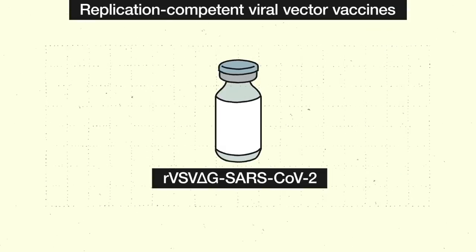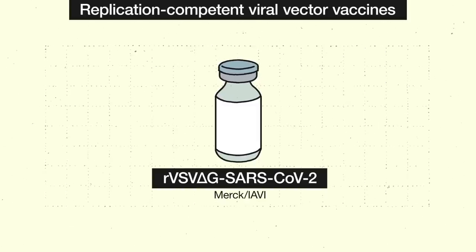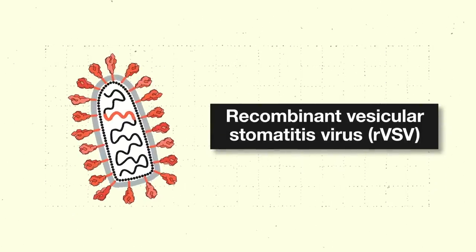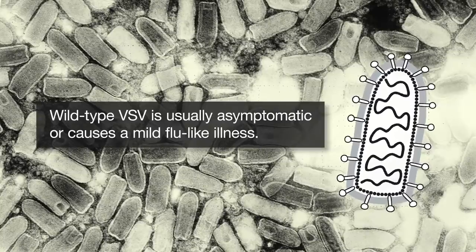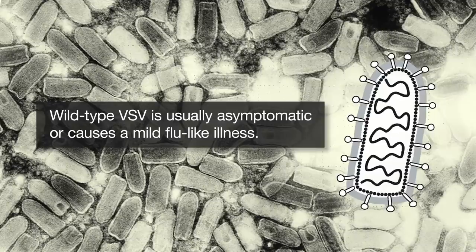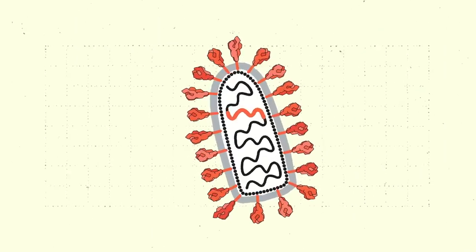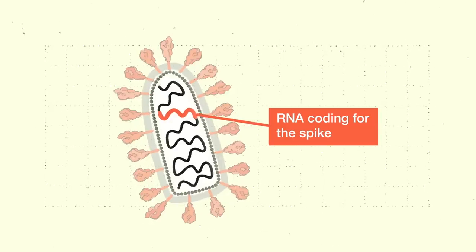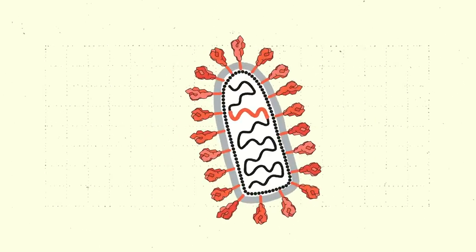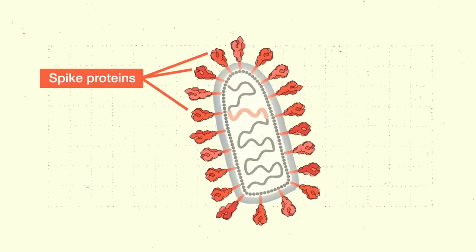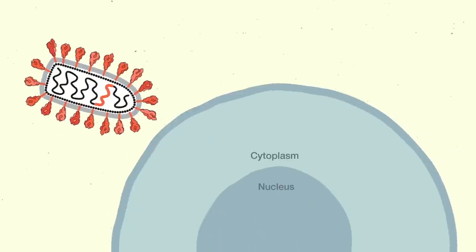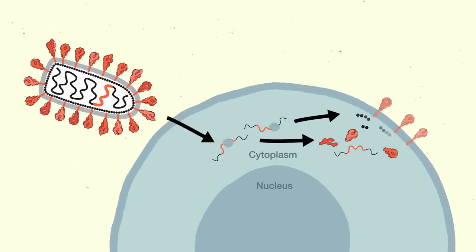Now let's look at replication-competent virus vectors. This Warp Speed vaccine that's being developed by Merck in partnership with IAVI is an example. It uses recombinant vesicular stomatitis virus. In humans, wild-type VSV is usually asymptomatic or causes a mild flu-like illness. The researchers replaced part of its RNA sequence with RNA coding for the spike. Unlike the adenoviruses, this RVSV vector does display the spike on its surface. After the RVSV infects a host cell, the cell's machinery expresses the spike.